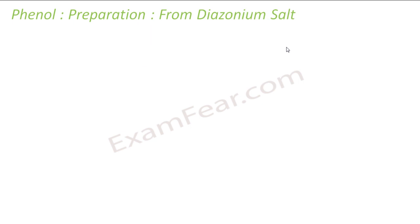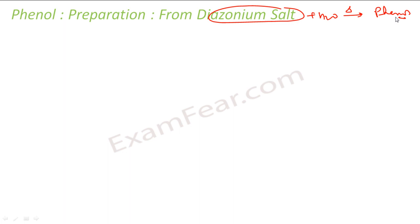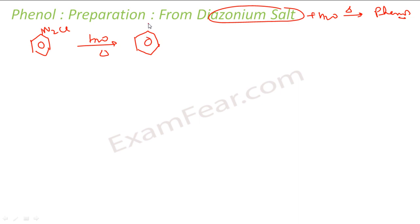The next method is from diazonium salt using steam distillation. We have the diazonium salt. We take water, heat it, and we get phenol. The reaction is: benzene diazonium chloride (PhN₂Cl) plus water, on heating, gives phenol plus nitrogen gas plus HCl.